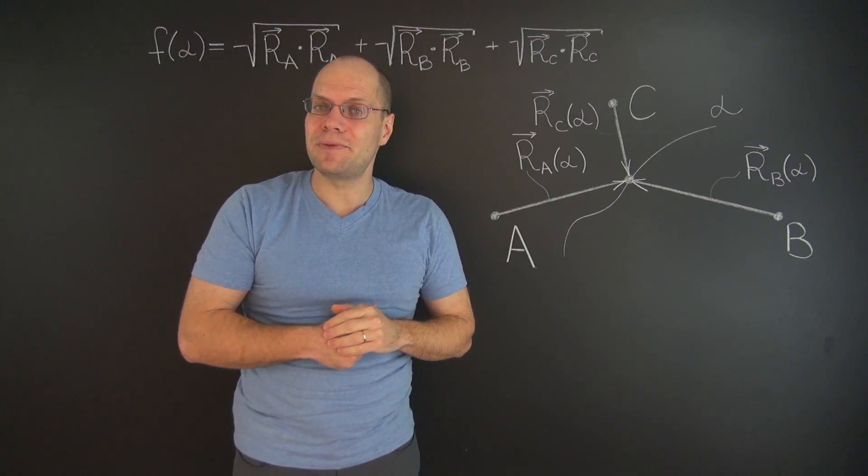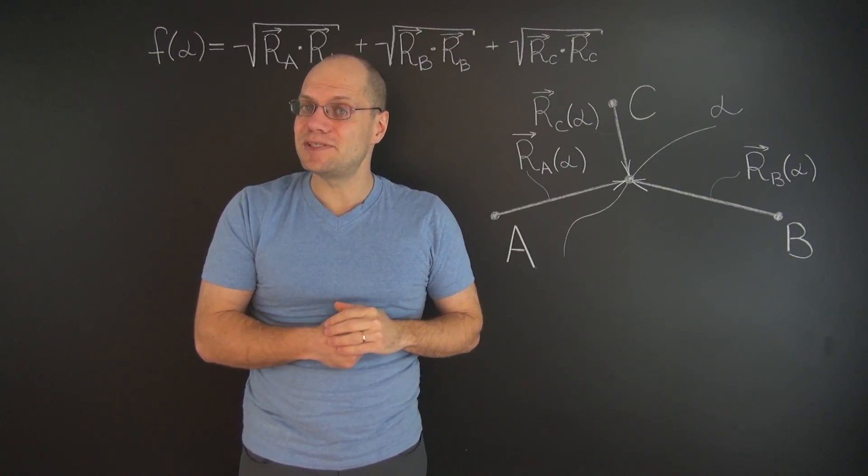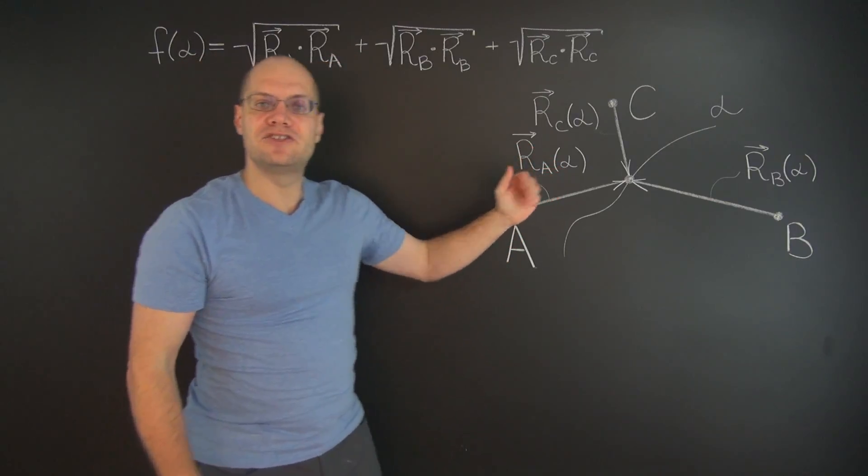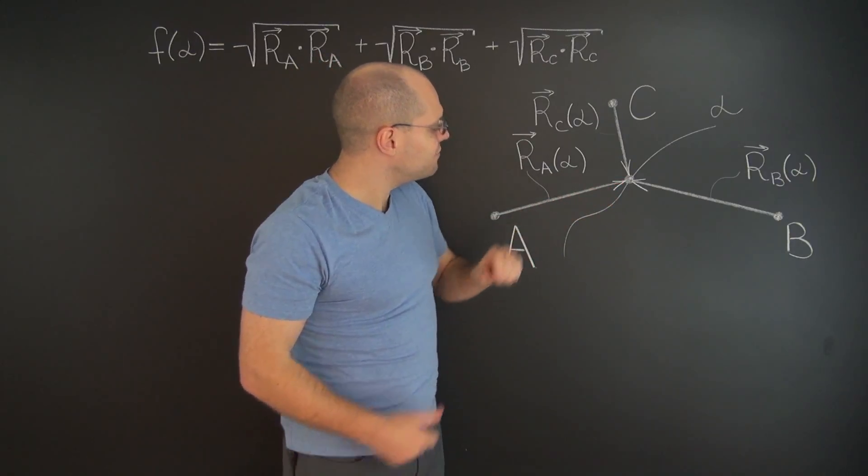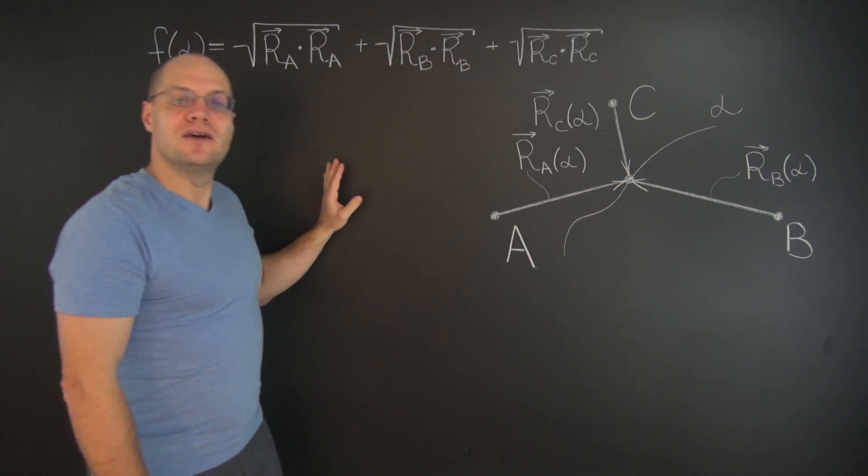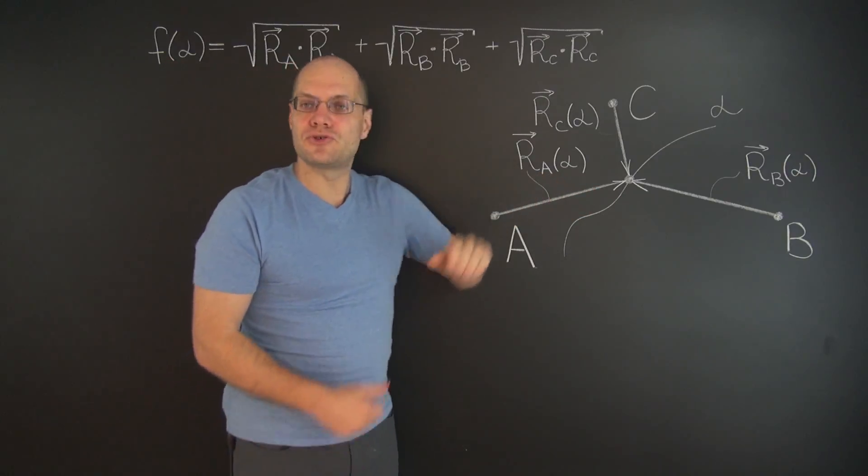We'll label them by N sub A, N sub B, and N sub C. That point in the directions of these vectors. So let me write down this expression and draw these vectors.